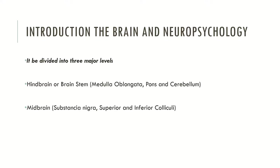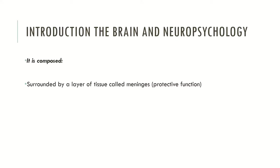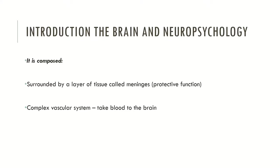The forebrain contains the telencephalon — composed of the basal ganglia, limbic system, and cerebral cortex — and the diencephalon, which contains the thalamus, hypothalamus, and mammillary bodies. The brain is also composed of several layers of tissues called meninges, some of which are very important in protecting the brain during major traumatic events. The brain also has a complex vascular system that delivers blood and necessary nutrients to nerve cells, as well as four major ventricles filled with cerebrospinal fluid, which keeps the brain healthy by removing dead nerve cells.